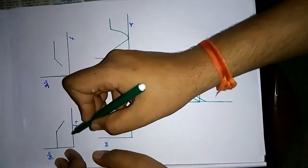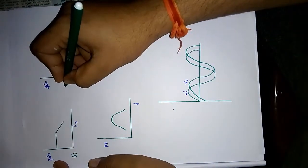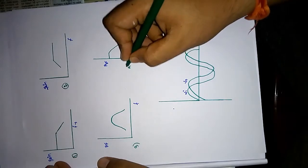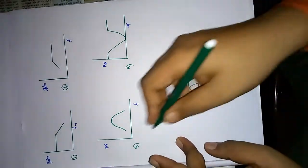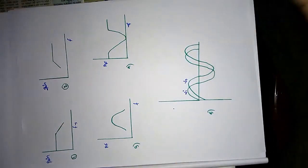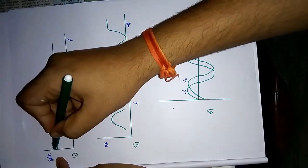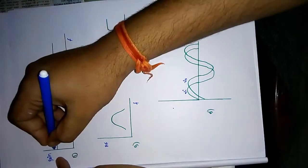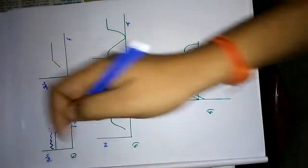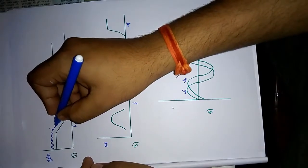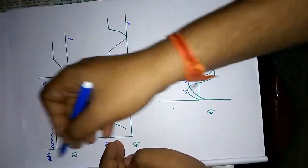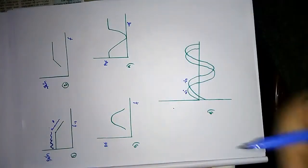Looking at output characteristics: first is low pass filter, second is high pass filter, third is band pass filter. The region highlighted in a different color is called the passband, where at that frequency you can get gain. The region where the gain rolls off is called the stopband.